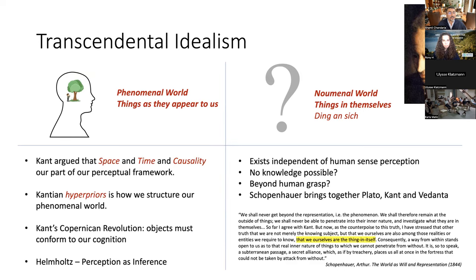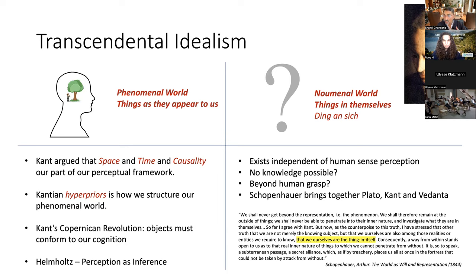What Kant showed is that we only experience the phenomenal world - the things as they appear to us. We use the categories of space, time, and causality to arrange our perceptual framework. These things - space, time, causality - are kind of hyper-priors that we bring to bear to organize our sensory data. He thought he had created a Copernican revolution: it's objects that must conform to our cognition rather than cognition conforming to objects. About 100 years later, Helmholtz started to crystallize this as perception as inference.